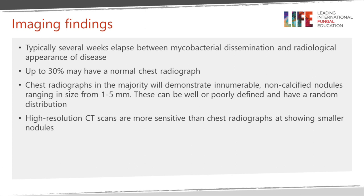In the majority of patients where we see an abnormality, you see innumerable myriad non-calcified nodules. Typically, these need to be picked out with a pair of forceps to give you an idea of how small they are — if you pick up the nodule with your fingers, then they're not miliary. Millet seeds are extremely small. The nodules may be poorly or well-defined depending on the degree of cell-mediated immunity, and characteristically they have a random pattern through the lungs.